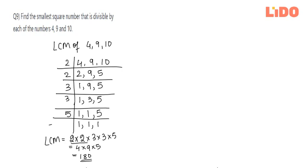Great. So 180 is a number that if you divide by 4, 9 and 10, you will get a completely divisible number. But over here the question says we need to find the square number. So for that let's check if 180 is a perfect square or not.